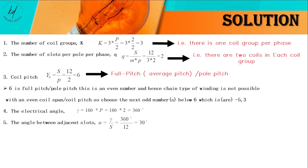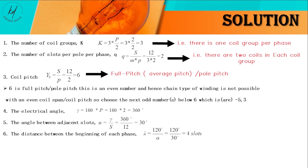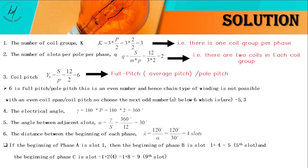Fourth, the electrical angle, represented by the letter gamma, can be found by multiplying the number of poles by 180 degrees, which gives 360 degrees. Fifth, the angle between adjacent slots, represented by the letter alpha, is calculated by dividing the electrical angle by the number of slots, giving 30 degrees.